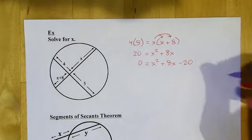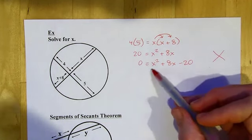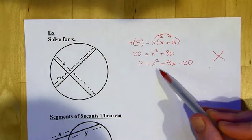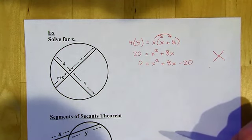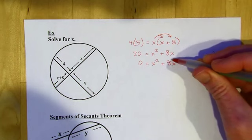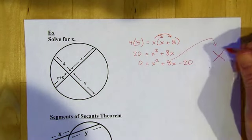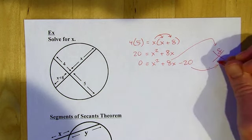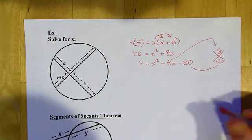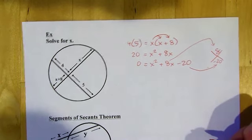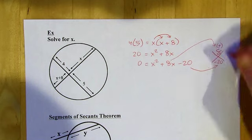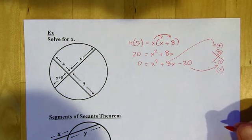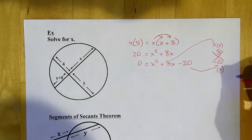To factor this, I can use a diamond problem since it begins with X squared. First I check for a common factor — there isn't one. I put the middle coefficient 8 at the top of the diamond and negative 20 at the bottom. I need two numbers whose sum is 8 and whose product is negative 20.